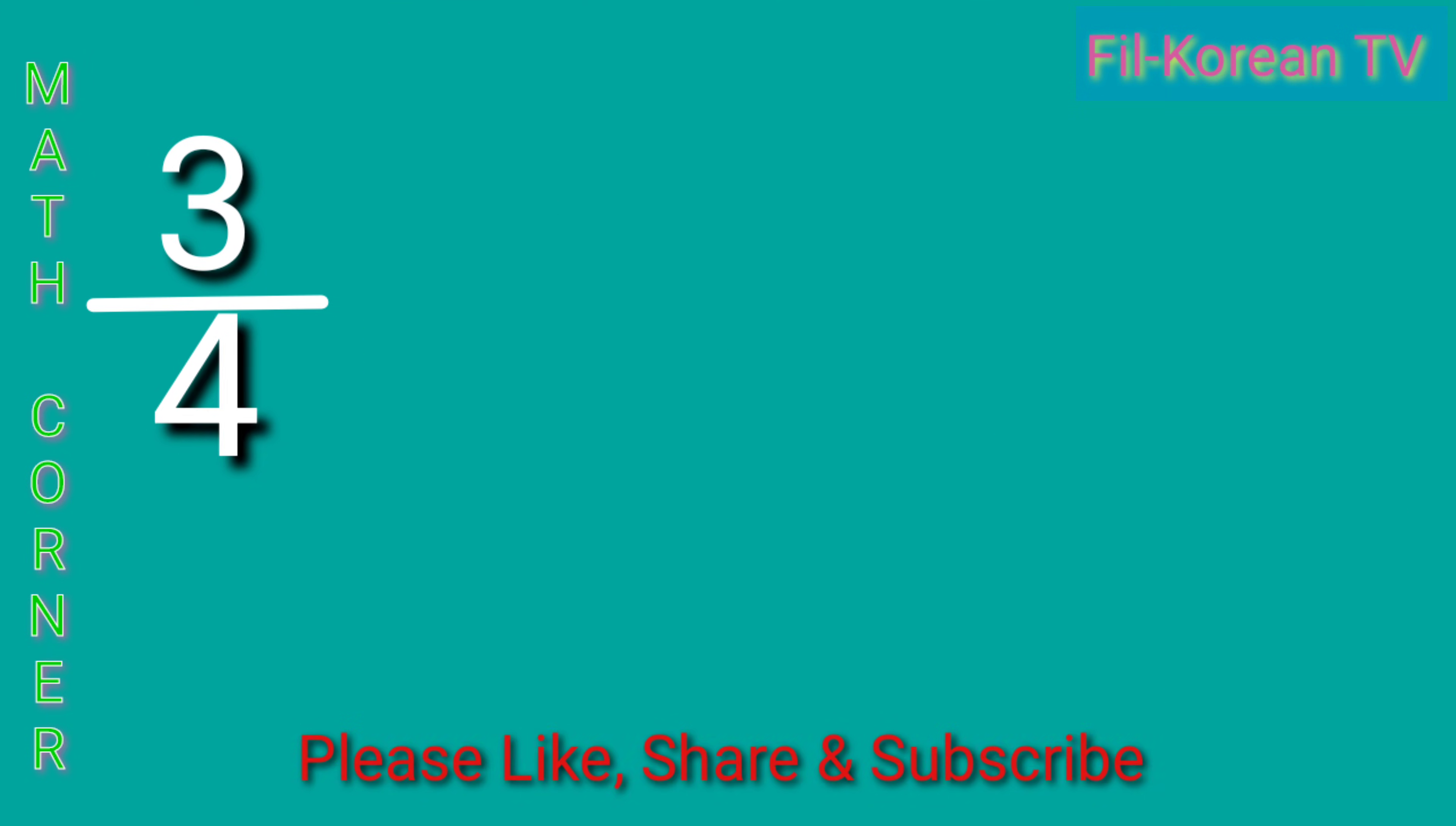Next example, 3 fourths minus 2 sevenths equals. The first step is to change the fractions to similar fractions. Get the LCD of 4 and 7 which is 28.